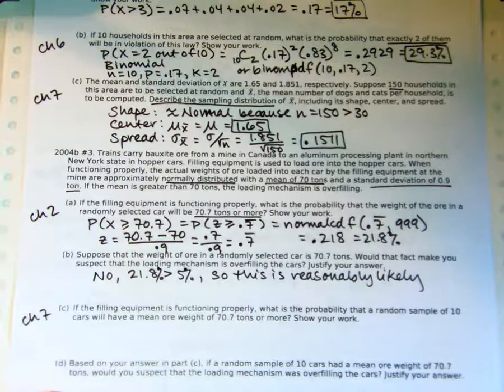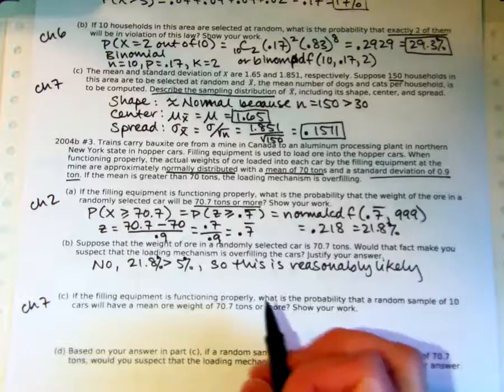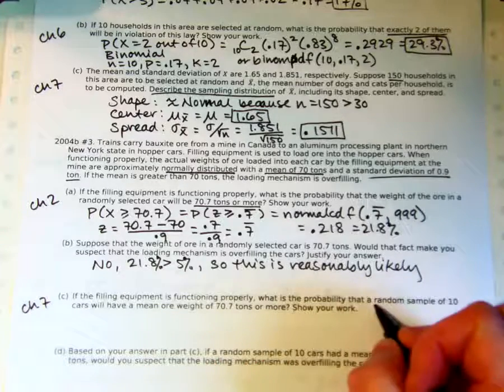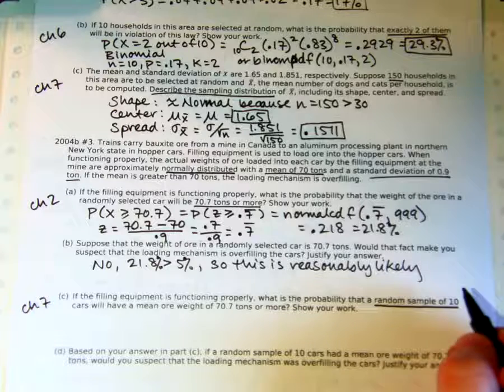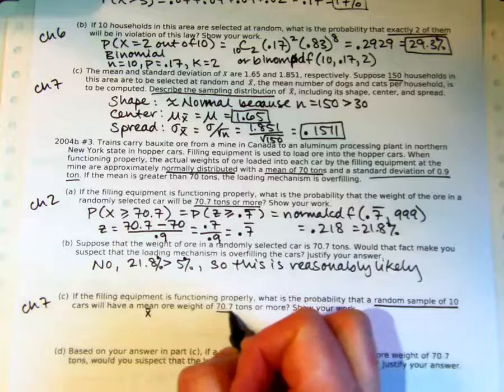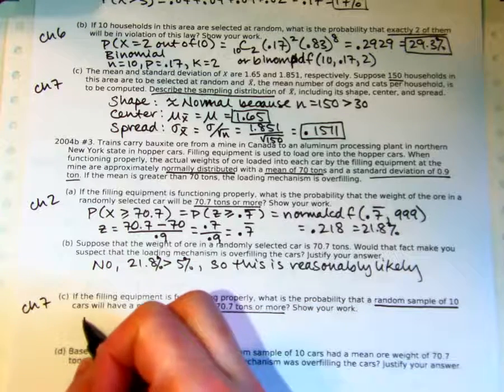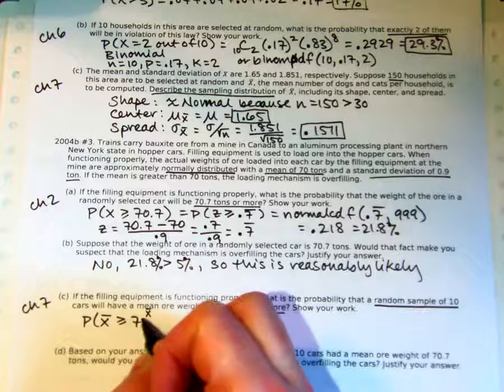However, the next one might come out different. So I don't want to give it away too much. But now we're taking a random sample of 10 cars. And the probability that that random sample of 10 has a mean, that's x̄, weight of 70 tons or more. So now I'm doing the probability that x̄, not x, is greater than or equal to 70.7.